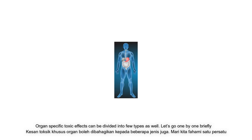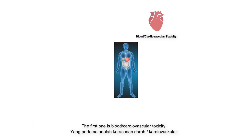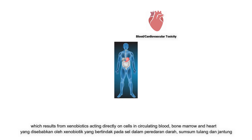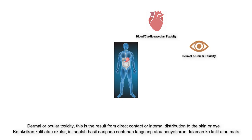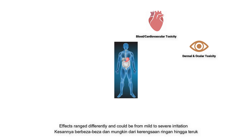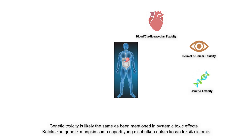Organ-specific toxic effects can be divided into a few types as well. The first one is blood or cardiovascular toxicity, which results from xenobiotics acting directly on cells in circulating blood, bone marrow, and heart. Dermal or ocular toxicity results from direct contact or internal distribution to the skin or eye. Effects range from mild to severe irritation. Genetic toxicity is the same as mentioned in systemic toxic effects.